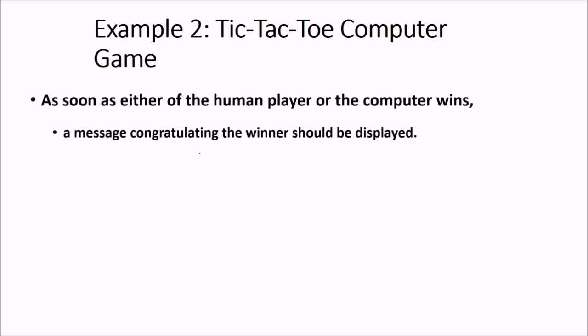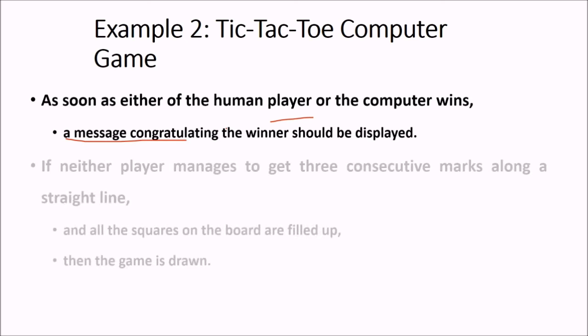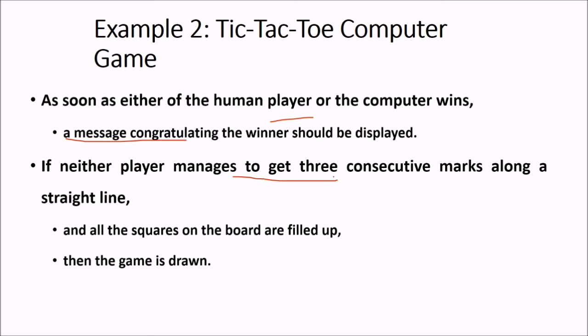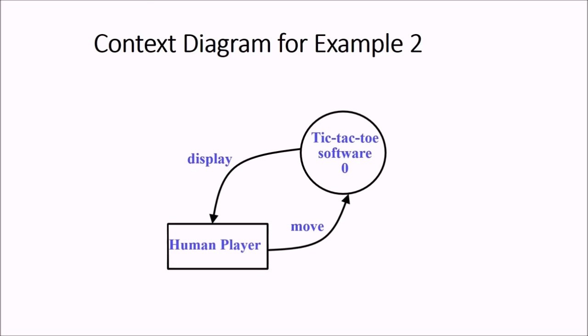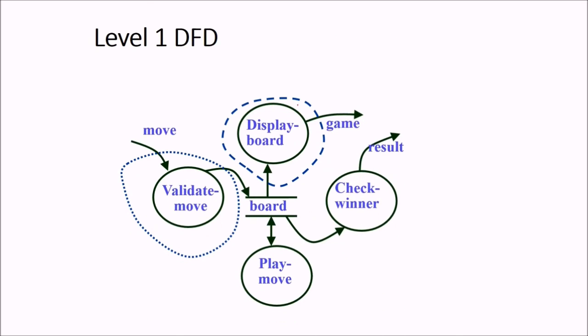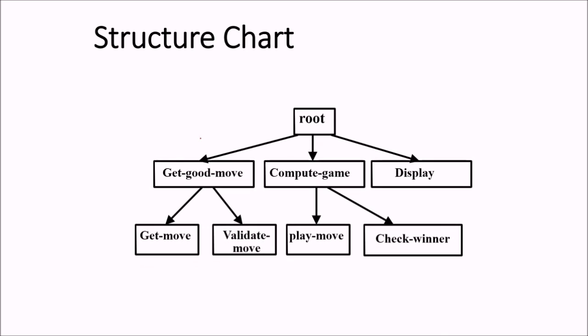And about tic-tac-toe computer game, as soon as either human player or computer wins, we have to congratulate the winner. If neither player manages to get 3 consecutive marks along a straight line, then we have to show that the game is drawn. So this is tic-tac-toe, human player, display and move, we make a level 1 DFD. So this is to validate the move. This is the display board. This is the play move. This is check the winner. And in this, how we are going to make it? We can move it and make it like root. These are 3 possibilities and these 2 again are being divided into sub-functions.